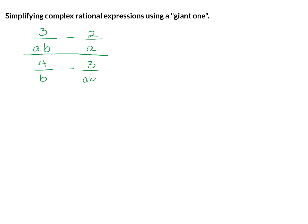So for the numerator, our LCD is going to be AB. And for our denominator, the LCD is also going to be AB. We are then going to multiply the entire fraction by what is called a giant one, AB over AB, consisting of our LCD for the entire fraction.